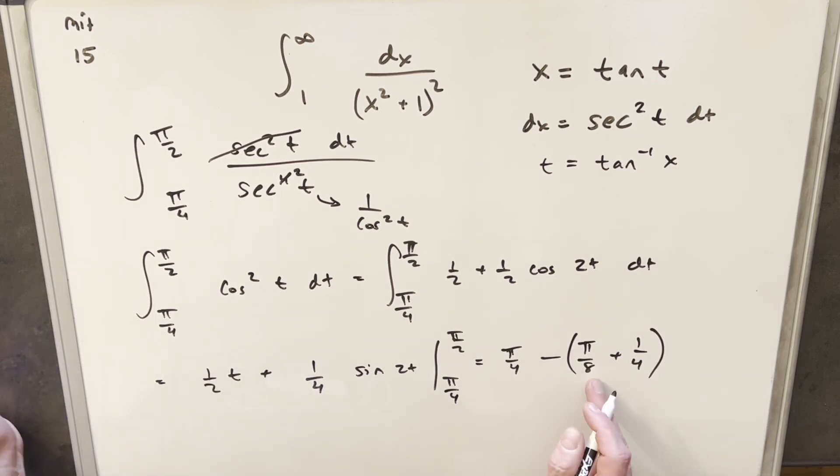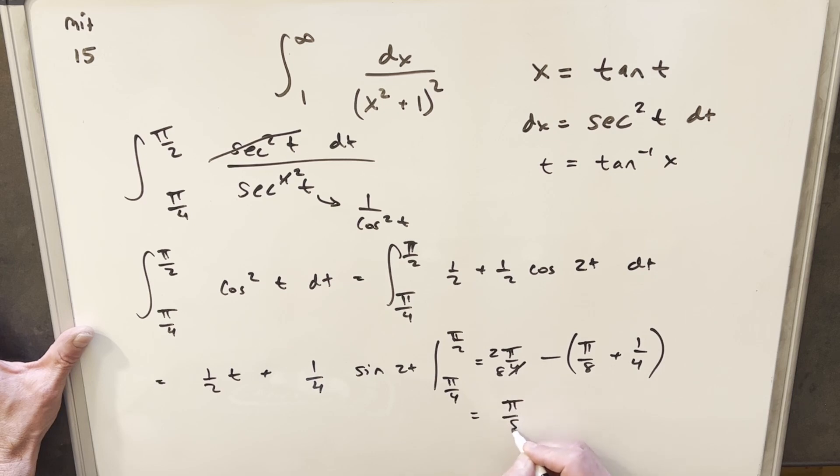For simplification, let's get a common denominator. I'm going to write π/4 as 2π/8. So 2π/8 minus π/8 is going to be π/8. Distributing this minus in, we have minus 1/4. And that's it.